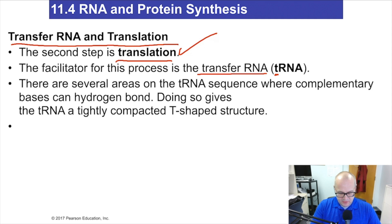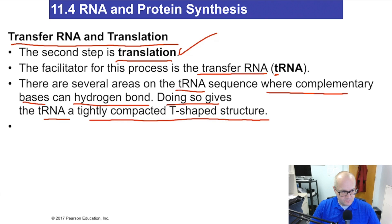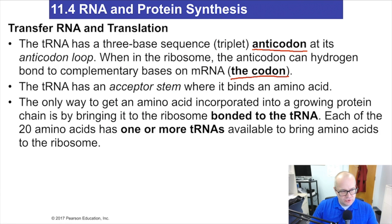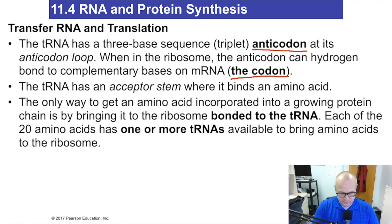There are several areas in the tRNA sequence where complementary bases can hydrogen bond, giving tRNA a tightly compact capital T structure. Now, the first important word to learn is anticodon. An anticodon is a three-base sequence that is on tRNA — it's just a three-base sequence located on the tRNA molecule.